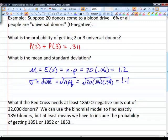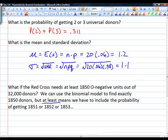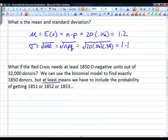Changing the question now. What if the Red Cross needs at least 1,850 units of O negative blood out of 32,000 donors? We can use the binomial model to find exactly 1,850 donors, but the phrase 'at least' means that we have to include the probability of getting 1,851, 1,852, all the way up to 32,000.